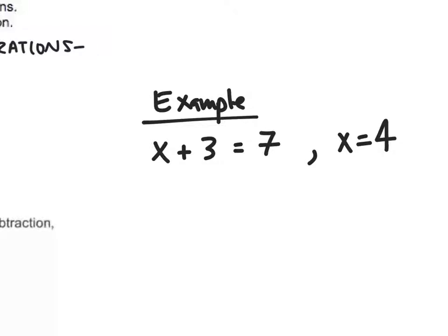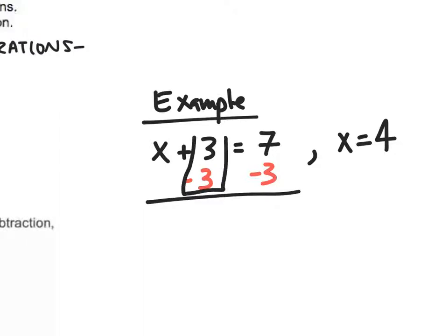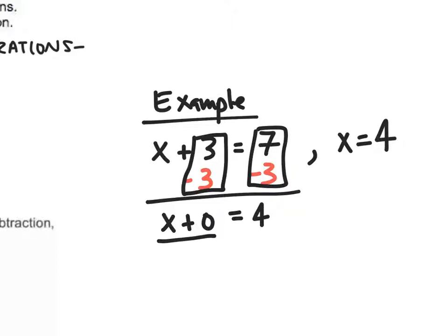But you also have to think about how to use algebra to do this. You're taking some number and adding 3 — what could we do to undo adding 3? The opposite of adding 3 would be subtracting 3. So if I subtract 3 from both sides, 3 minus 3 is 0, so I get x plus 0 is equal to 7 minus 3, which is 4. x plus 0 is just x, so x is equal to 4.